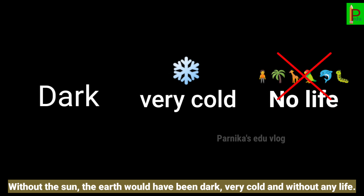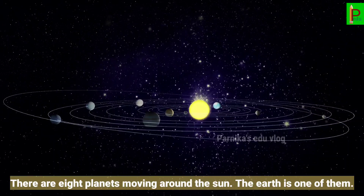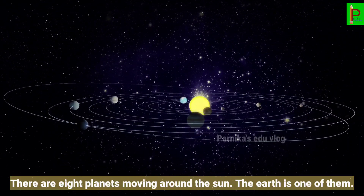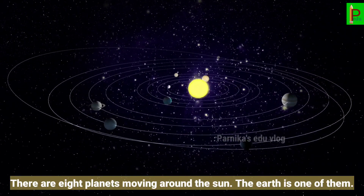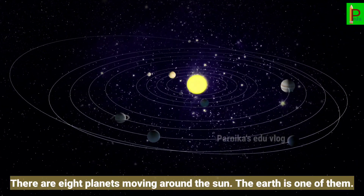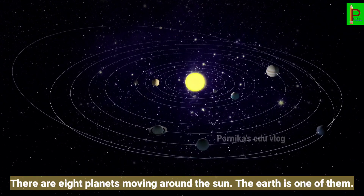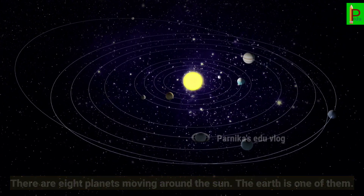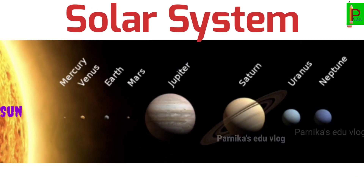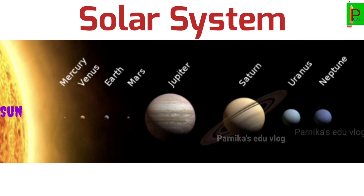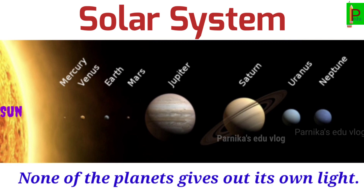Without the Sun, the Earth would have been dark, very cold, and without any life. There are eight planets moving around the Sun, and the Earth is one of them. The Sun and the eight planets are part of the solar system. None of the planets gives out its own light.